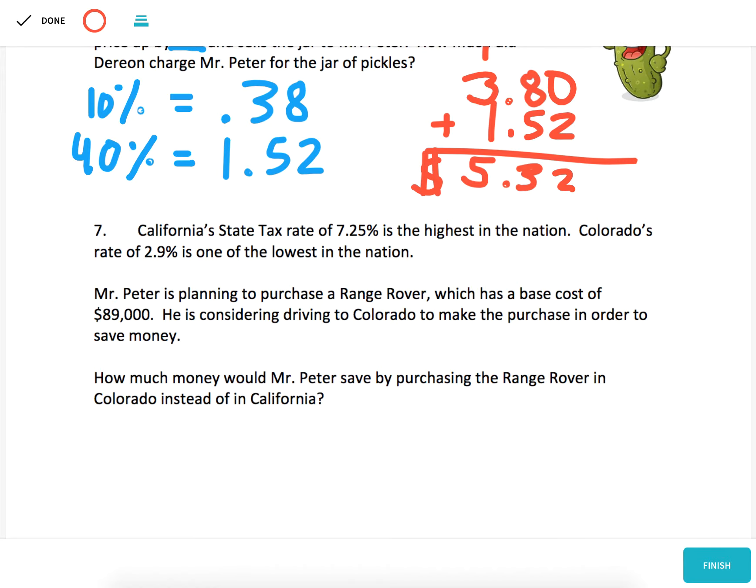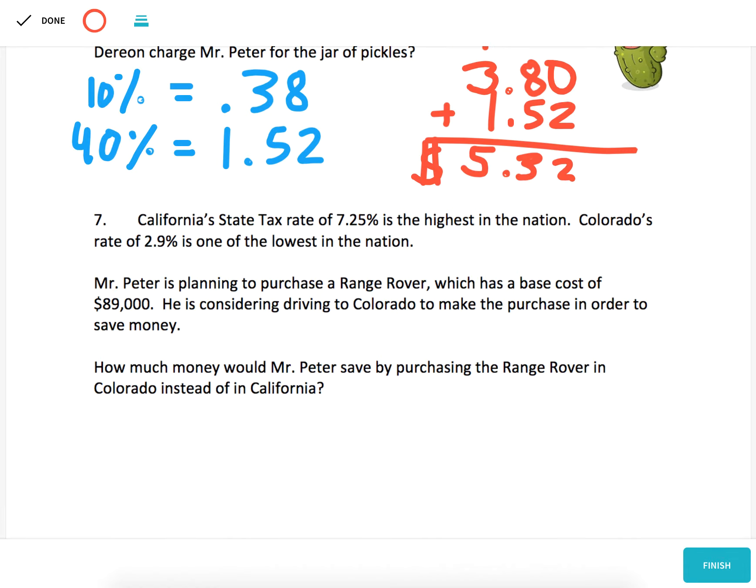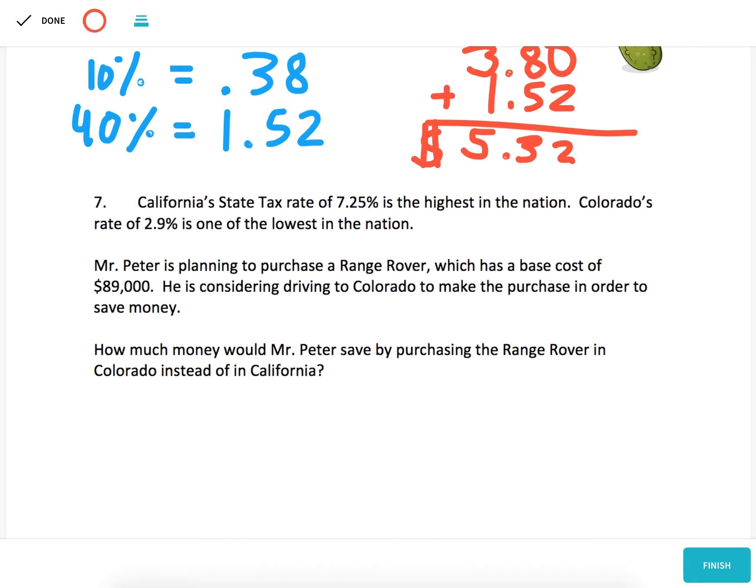Number seven, California's state tax rate of 7.25% is the highest in the nation. Colorado's rate of 2.9% is one of the lowest. Mr. Peter is planning to purchase a Range Rover, which has a base cost of $89,000. He is considering driving to Colorado to make the purchase in order to save money. How much money would Mr. Peter save by purchasing the Range Rover in Colorado instead of in California?